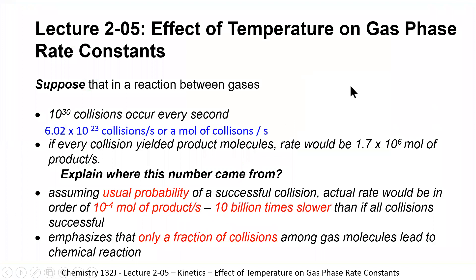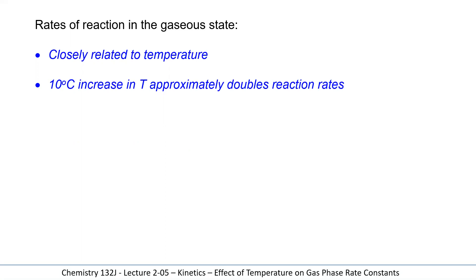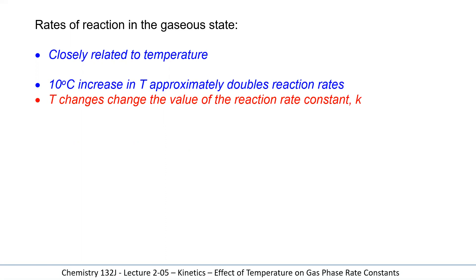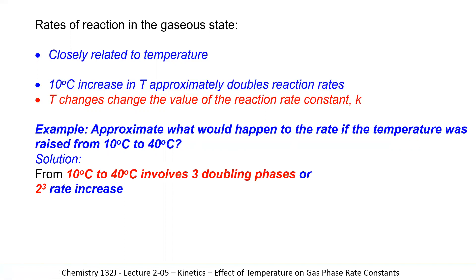The rates of reactions in the gaseous state are closely related to temperature, as we just saw. A 10-degree increase in temperature approximately doubles the rate of a chemical reaction, and temperature changes the value of rate constants. So approximately, how much would the rate change if I change the temperature from 10 degrees to 40 degrees? If it doubles with every 10 degrees, this is going to double three different times. A doubling once gives a rate of two, twice gives four, three times gives eight. So with three doubling phases — two to the power of three — it will increase by eight times.